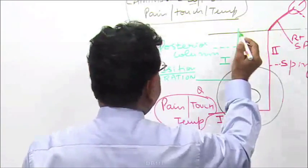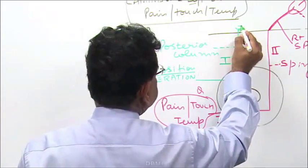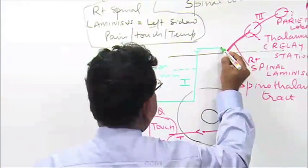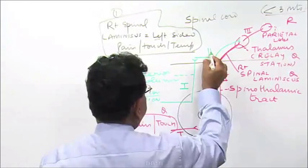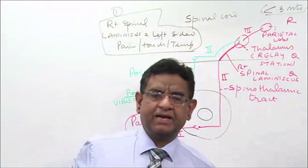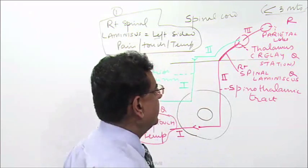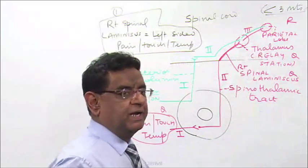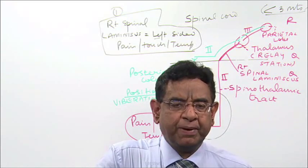They enter the brain, and in the brain they relay. The second order neuron goes to the other side and relays in the thalamus. The third order neuron then goes to the contralateral parietal lobe. Ultimately, all sensations go to the contralateral parietal lobe.